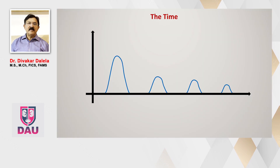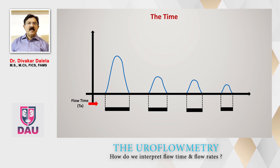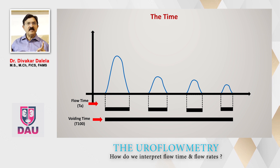Suppose you have this kind of graph in front of you. This patient has voided interruptedly, and the time taken for each segment — when you add all four — is called flow time. But if you consider the total time from the beginning of the act of micturition to the end, that is called voiding time. You should understand the difference between flow time and voiding time.